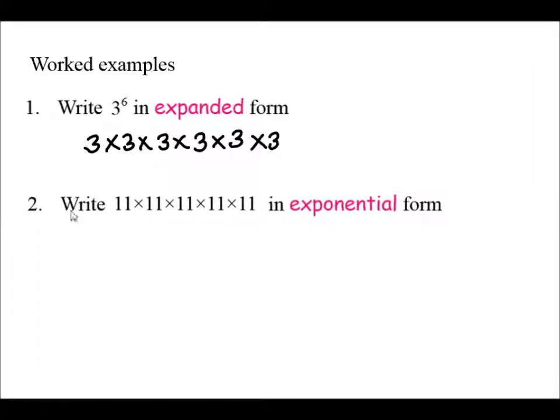The second example, write 11 times 11 times 11 times 11 in exponential form. Well, our base is 11. How many 11's multiplied together? 1, 2, 3, 4, 5. So that is 11 to the power of 5 in exponential form.